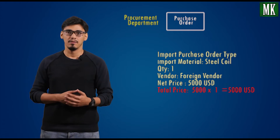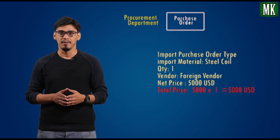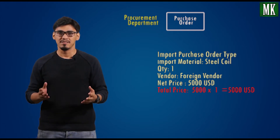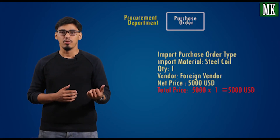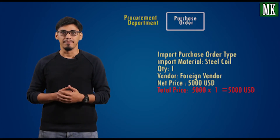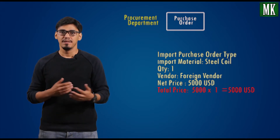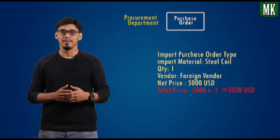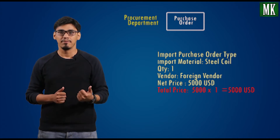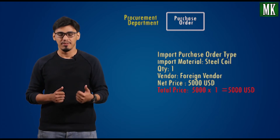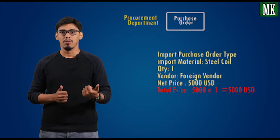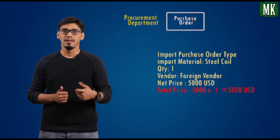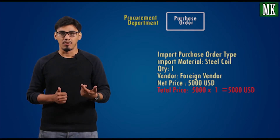Let's continue with the process. Let's take an example of procurement of steel coil, which is import material. The first step is to create the purchase order using the import purchase order type. In this you specify the foreign vendor from which you have decided to procure the material, your material, its quantity, and the net price for the material.